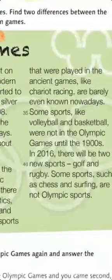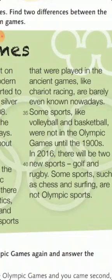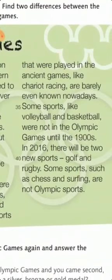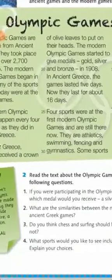Some sports that were played in the ancient games, like chariot racing, are barely even known nowadays — سباق العربات is not well known now. Some sports like volleyball and basketball were not in the Olympic Games until the 1900s. In 2016, there will be two new sports: golf and rugby. Some sports such as chess and surfing are not Olympic sports — chess and surfing are not considered part of the Olympic Games.